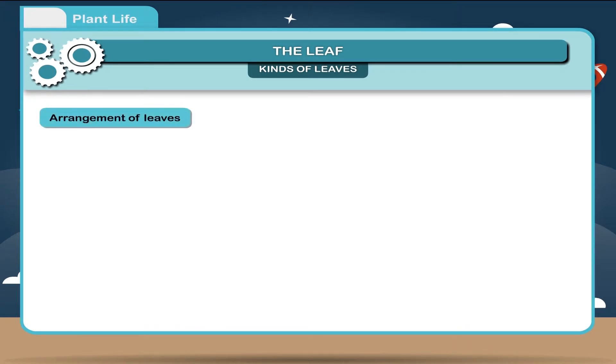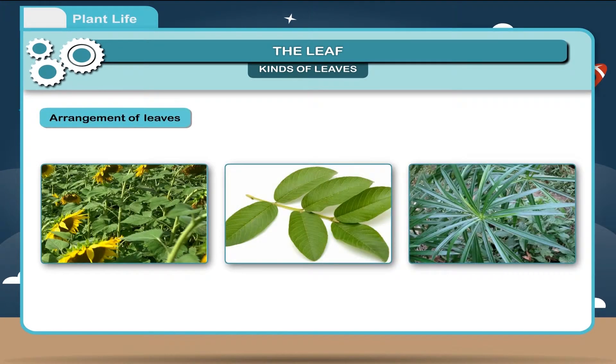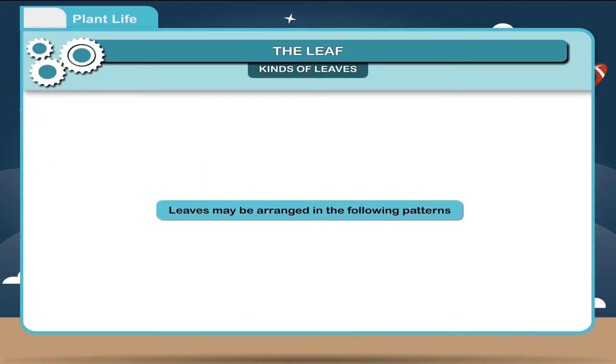Arrangement of leaves. The arrangement of the leaves on the stem or branch is called phyllotaxy. The leaves are arranged in such a way that they get maximum sunlight. Leaves may be arranged in the following patterns.